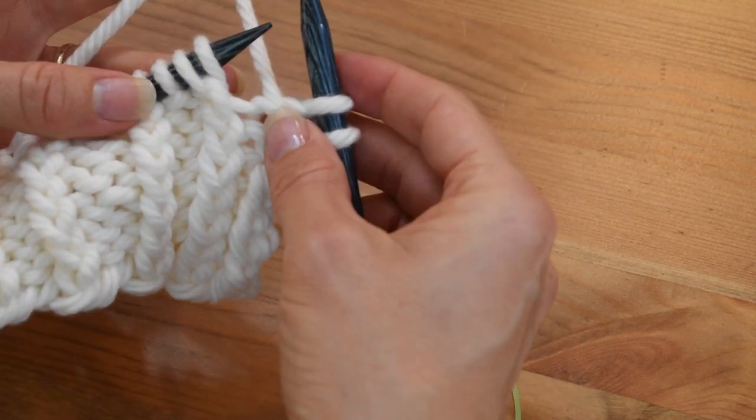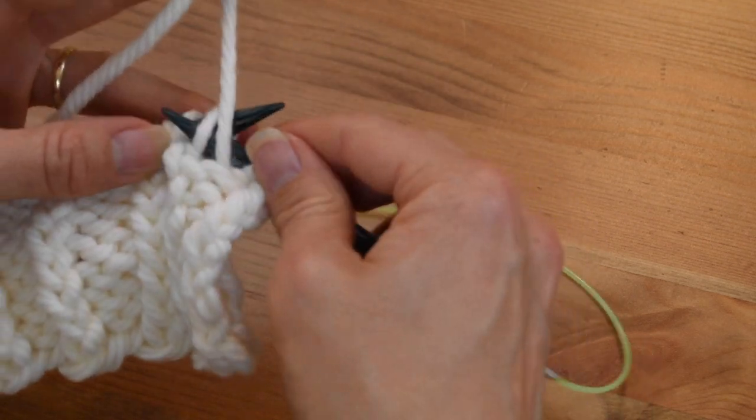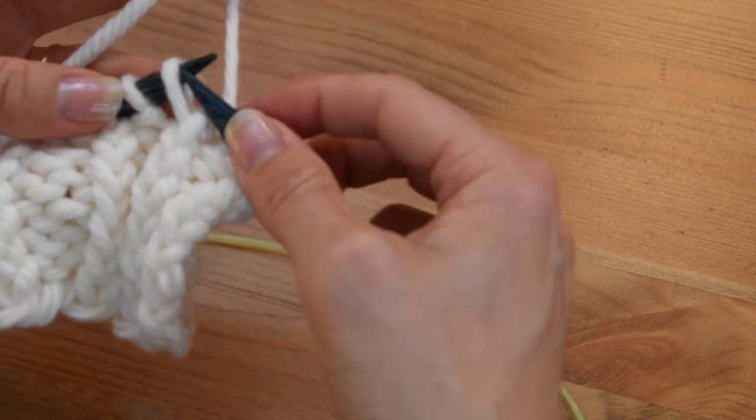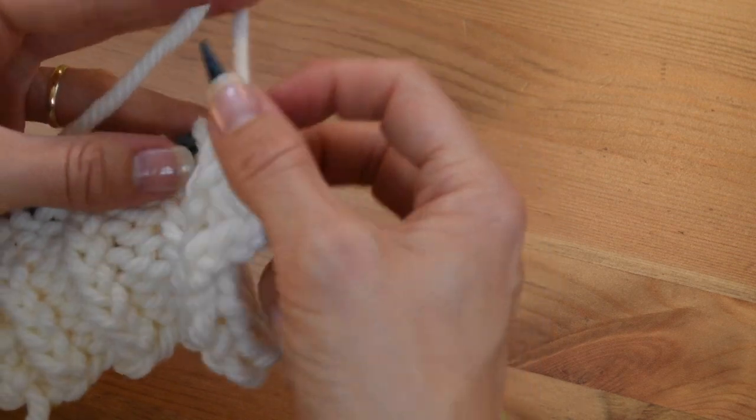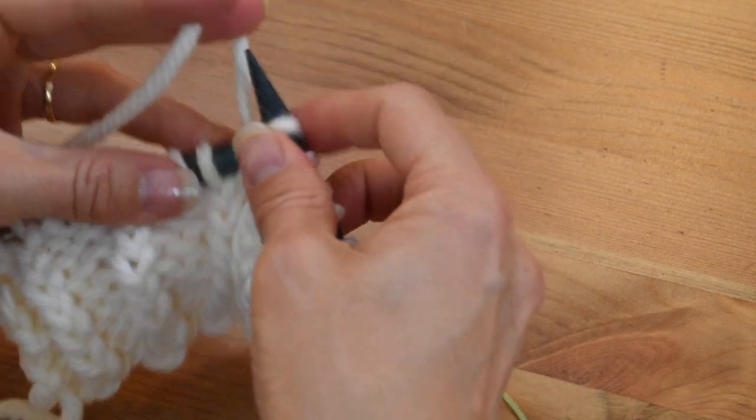Now we have two stitches in a different order, and all we have to do is knit them as we see them. So we purl one, then we knit this one through the back loop. Let's see that again.